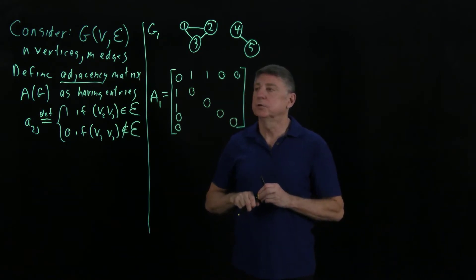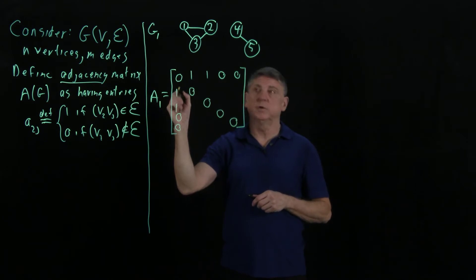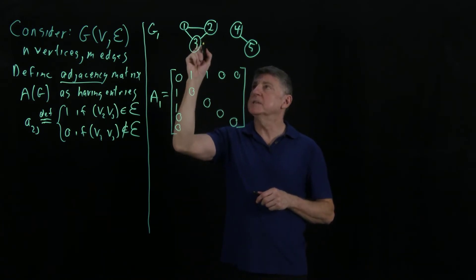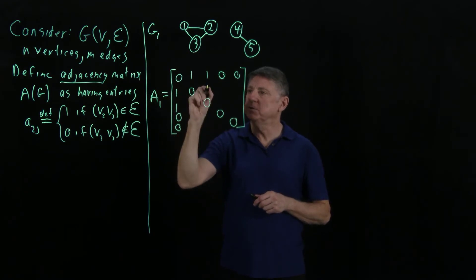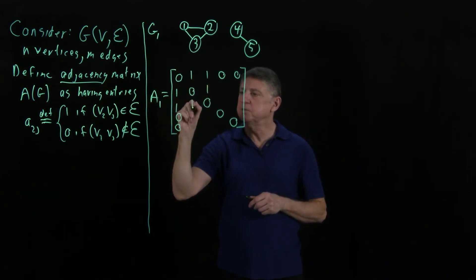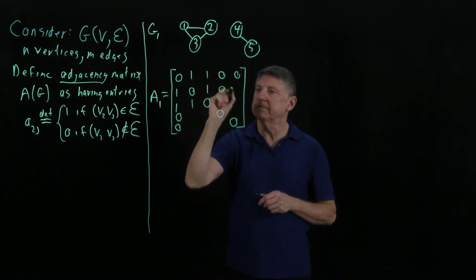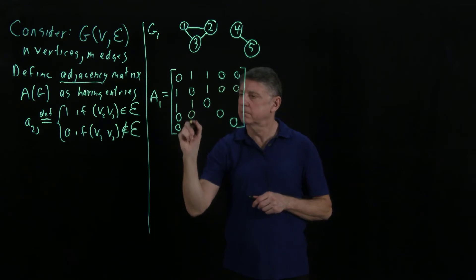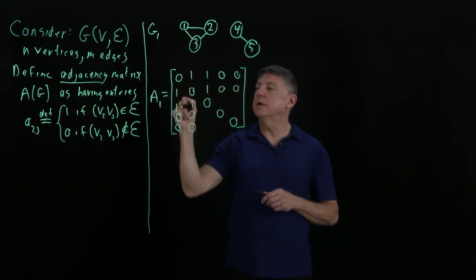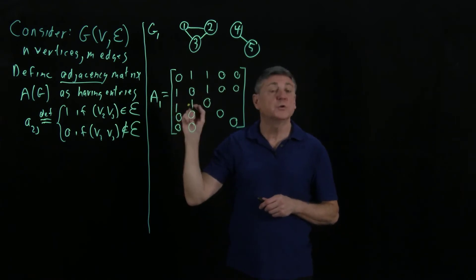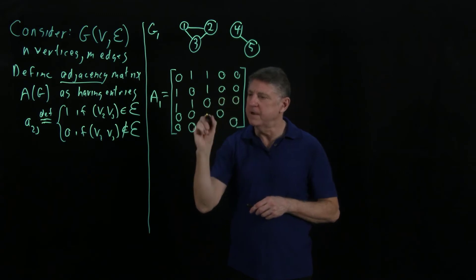Let's now turn to vertex 2. Vertex 2 is connected to vertex 1, which we've noted. Vertex 2 is connected to vertex 3. So that means that entry 2, 3 and entry 3, 2 are 1s and it's not connected to 4 or 5. Then vertex 3 is connected to 1 and connected to 2, which we've already noted. And it's not connected to 4 or 5.